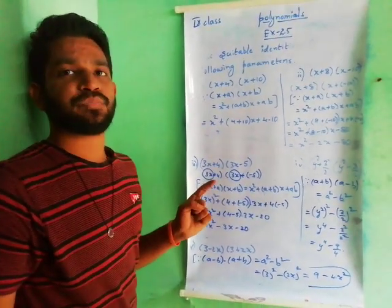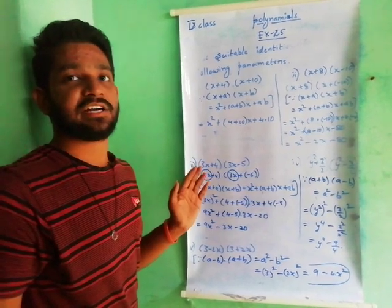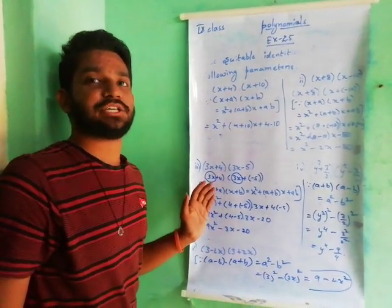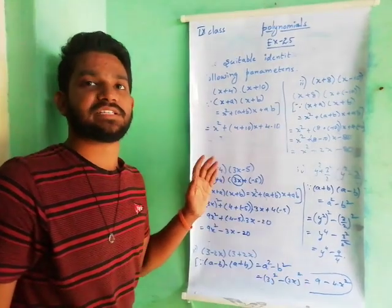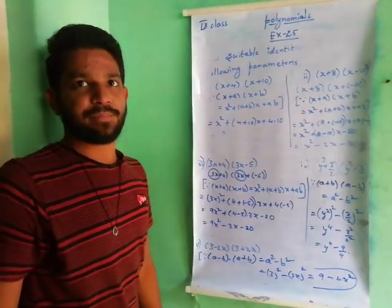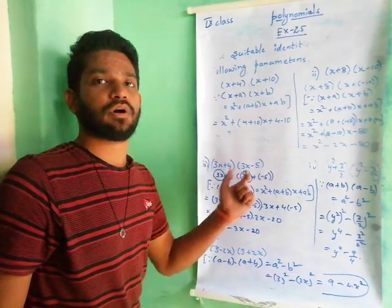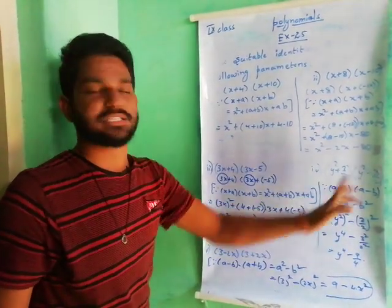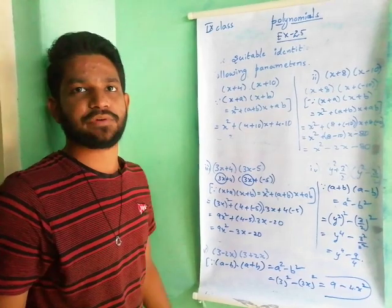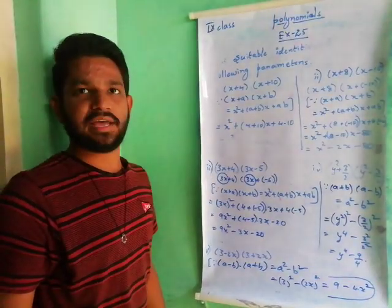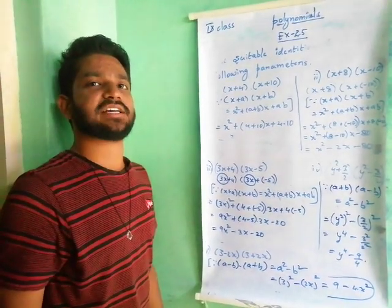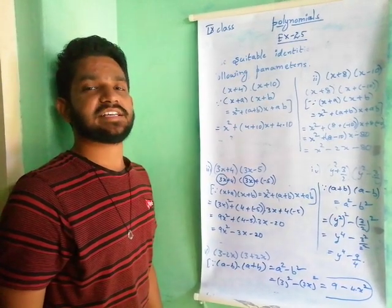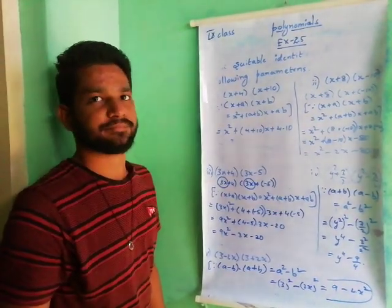In the first question, by using the identity x plus a into x plus b equals x square plus a plus b into x plus ab, we solved these problems. And a plus b into a minus b equals a square minus b square. Next video, we will discuss the second and third problems in exercise number 2.5. I'll see you next time. Bye.